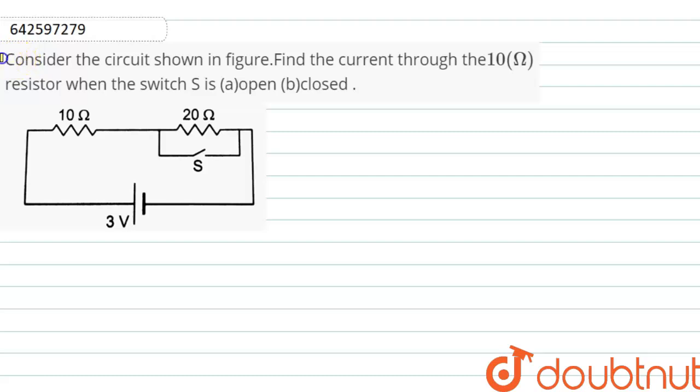Students, the question is: Consider the circuit shown in the figure. Find the current through the 10 ohm resistor when (a) the switch S is open, and (b) the switch is closed.